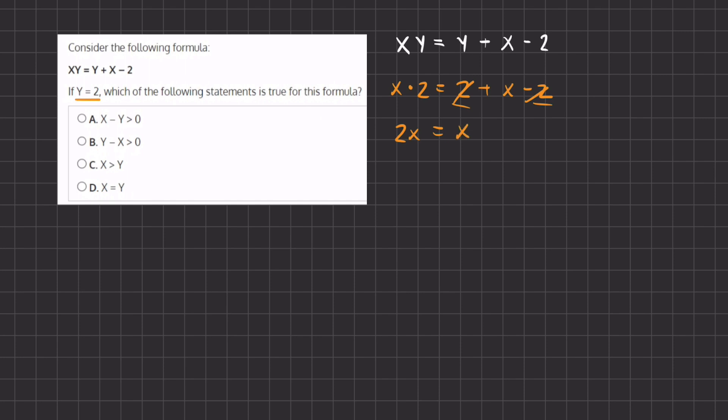Now let's move the x's to one side so we can subtract x on both sides and we are left with 2x minus x which is just 1x equals x minus x which is 0. So the value of x is 0 when the value of y equals 2.